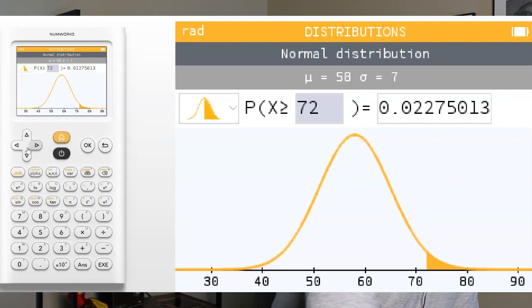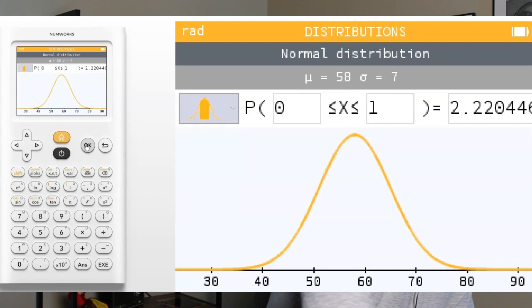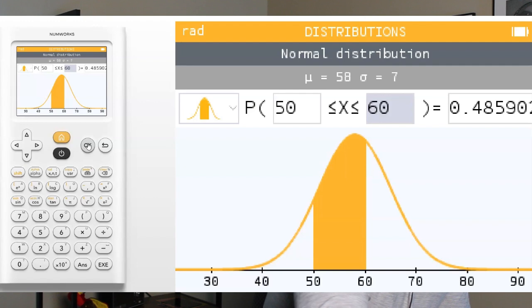It can even handle in-between questions. So go ahead and select OK, go to the middle one there for in-between, and let's say we have a question that says, what proportion of data is in between 50 and 60? So we're going to type in a 50 for the left side, and a 60 for the right side, and hit OK, and it shades us the area in between 50 and 60, and tells us there's about 48.6% of data.